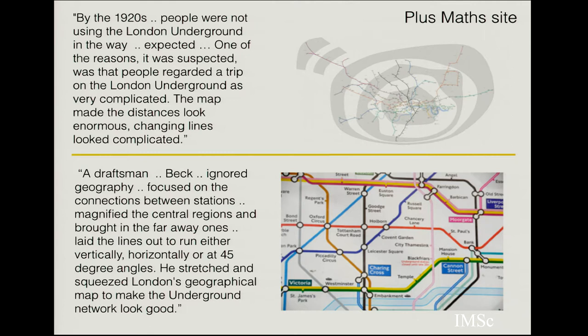Here is an example of one of the original networks: the London Underground Transportation Network. By the 1920s, people were not using the Underground as expected, partly because they regarded a trip on it as very complicated. The original spatial map shows how complicated it looks — changing trains to get from one point to another seemed very difficult. This visual complexity arises because the map retains the spatial aspects of where stations are relative to each other.